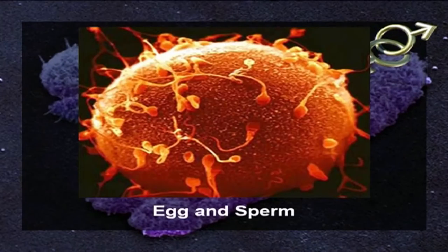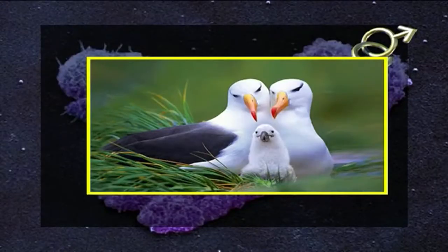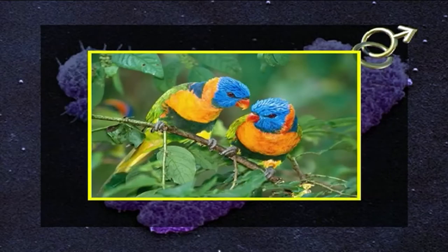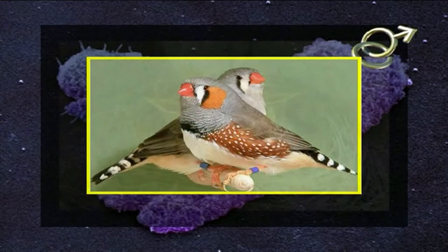If an egg is fertilized by a sperm carrying an X chromosome, an XX or female embryo will result, while fertilization of the egg by a Y-bearing sperm will produce an XY or male embryo. In some organisms including birds, the female contains the unlike pair of sex chromosomes; thus in these cases the mother determines the sex of the offspring.